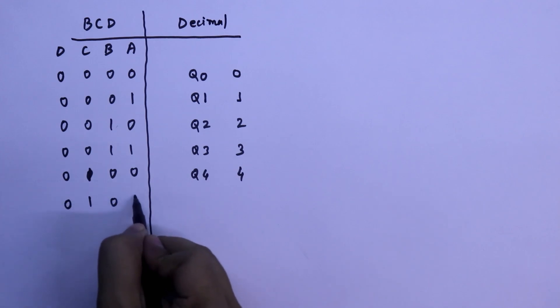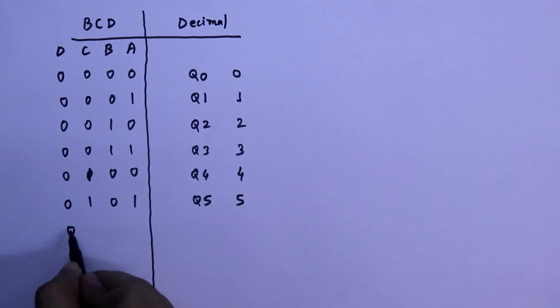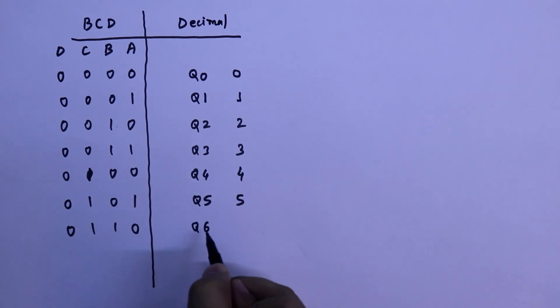0101, it is 5. 0110, Q6 will be high and it is equal to 6. 0111, Q7 will be high and it is 7. 1000, it is equal to 8. Q8, it is equal to 8 and the last input that is 1001, and it is equal to Q9. Q9 will be high. Binary 1001 is equal to 9.